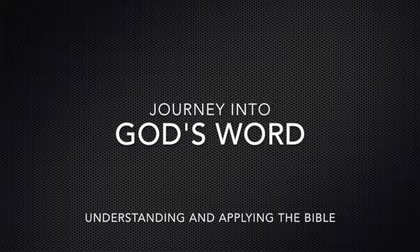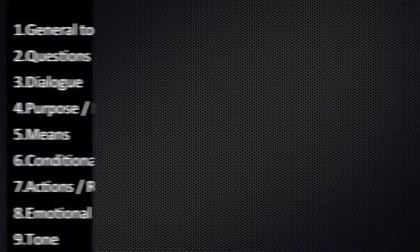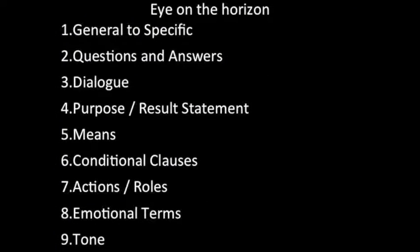We spent the majority of last week getting as close as we could, seeing as much detail as we could, trying to understand what a verse or passage says. This week I want to turn our observation skills a little bit—looking for details but not as close, just a little further back. Sometimes we can get too close, try to see too many details, and when details are isolated from the big picture we still don't know what the picture is. Tonight we're going to look at: general to specific, questions and answers, dialogue, purpose and result statements, means, conditional clauses, actions and roles, emotional terms, and the tone of a passage.